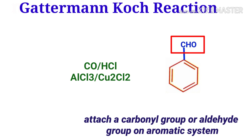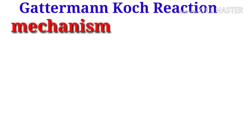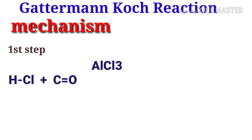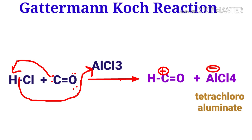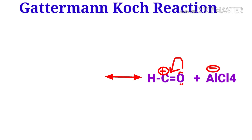What is the mechanism of this Gattermann-Koch formylation reaction? In the first step, the carbon atom of carbon monoxide gets protonated to form a positively charged species and a negatively charged species, that is tetrachloroaluminate (AlCl4⁻). After this, the positively charged species undergoes resonance to give another form, and it acts as an active electrophile.